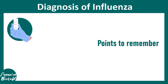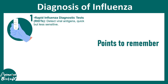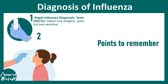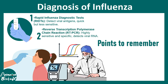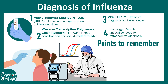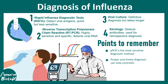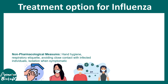Diagnosis of influenza can be done using a rapid influenza diagnostic test, which detects viral antigen — it's quick but not very sensitive. The best method is qPCR from a nasal swab, which looks for virus-specific RNA and is the most sensitive diagnostic method. Other methods like viral culture or serology-based testing may be useful for retrospective diagnosis or population studies. Proper and timely diagnosis can help control the spread of the virus in a population.